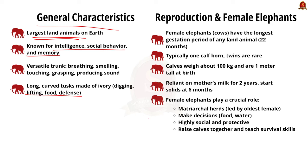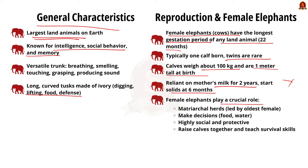Female elephants, also known as cows, have a long gestation period lasting about 22 months — the longest pregnancy of any land animal. After this period, usually one calf is born, though twins are rare. When a calf is born, it weighs around 100 kg and is about 1 meter tall. Calves rely on the mother's milk for the first two years but start trying solid foods around six months. Female elephants play a crucial role in the herd, which is typically matriarchal, meaning it is led by the oldest and often largest female. The matriarch makes decisions for the group, like where to find food and water. Female elephants are highly social and protective, raising calves together and teaching them essential survival skills.